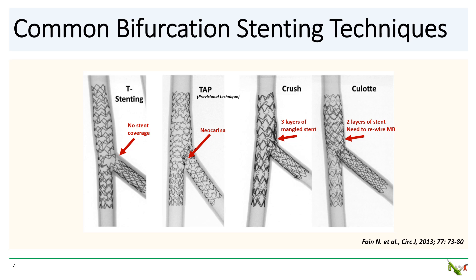TAP, or T and protrusion, is a modification of T-stenting, also very straightforward. Unlike T-stenting, it does provide good coverage of the bifurcation, but it will leave behind a small neocarina and is usually best suited for larger bifurcation angles and smaller side branches.